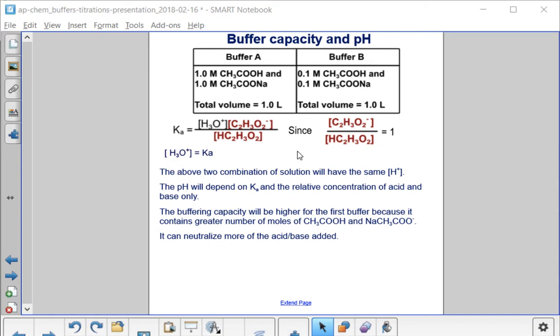The buffering capacity will be higher for the first buffer because it contains greater number of moles of acetic acid and sodium acetate. Therefore, it can neutralize more of the acid or base that is added.